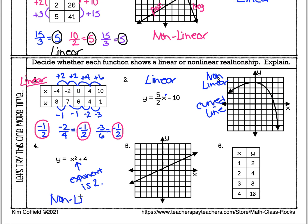Number five: we've got a straight continuous line — no zigzags, no curves, nothing. This is a perfectly straight, continuous line. So this is linear for sure.